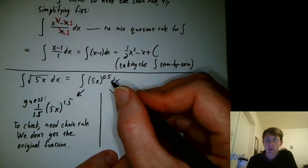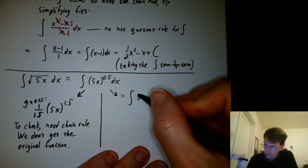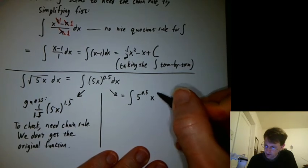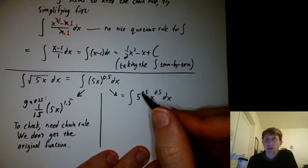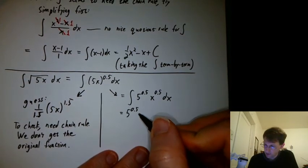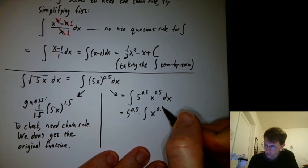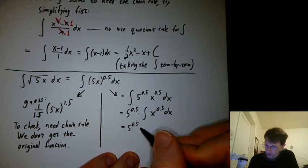Well, we can break up this power. We can say 5x to the 0.5 is 5 to the 0.5 x to the 0.5 dx. And then that's just a constant, so I could move it out of the integral if I wanted. x to the 0.5 dx. And then that's 5 to the 0.5.